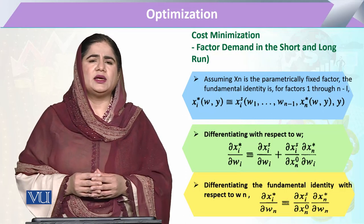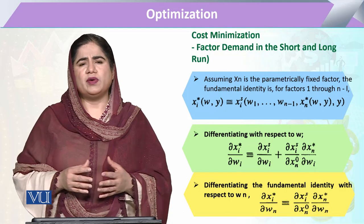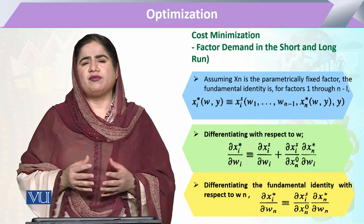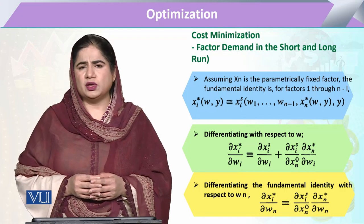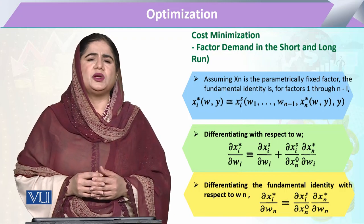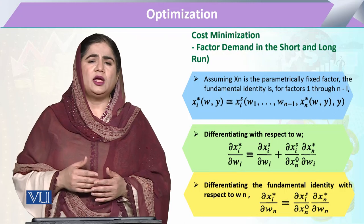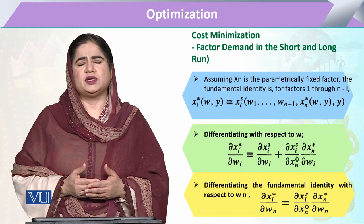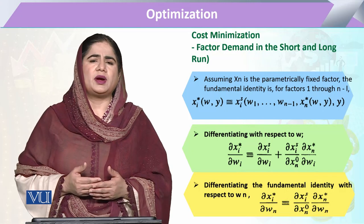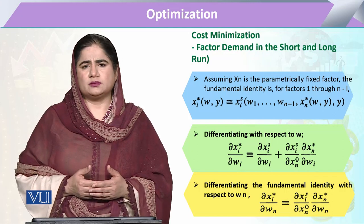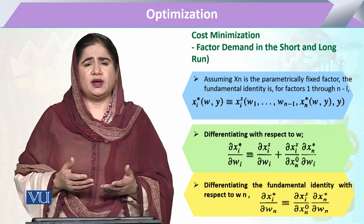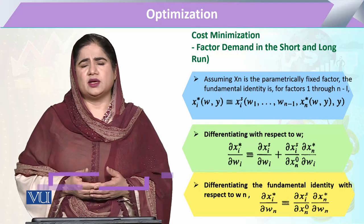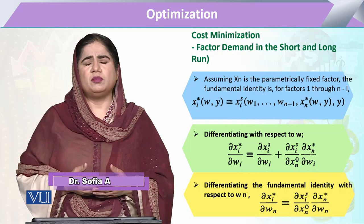A firm over time has to face various prices, because factor demand is the input price and output price depends on demand. If we suppose that the factors of production available in the market change, and if the change is positive in the sense that inflation — an increase in price — occurs, the firm has to respond and adjust.